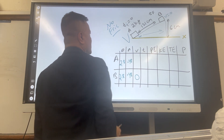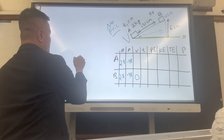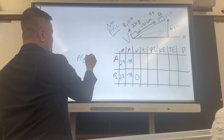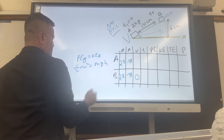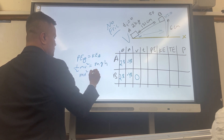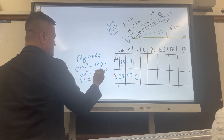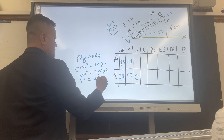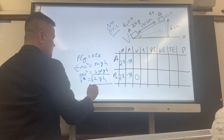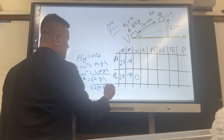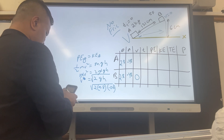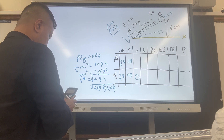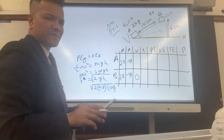To find the velocity at location A, we use energy conservation: potential energy at location B equals kinetic energy at location A. So mgh = ½mv², and the m's cancel giving v² = 2gh. Therefore v = √(2 × 9.8 × 0.06) = √1.176 ≈ 1.08 m/s.